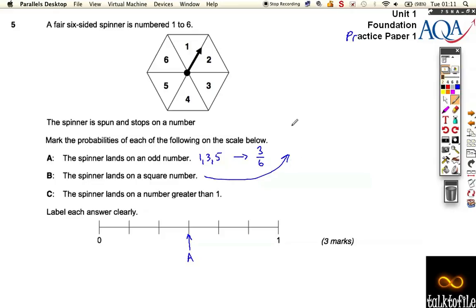Now the spinner lands on a square number. You must know what a square number is, it's really important. 1 times 1 is equal to 1, so that's a square number. 2 times 2 is 4, so 4 is a square number. 3 times 3 is 9, that's a square number.